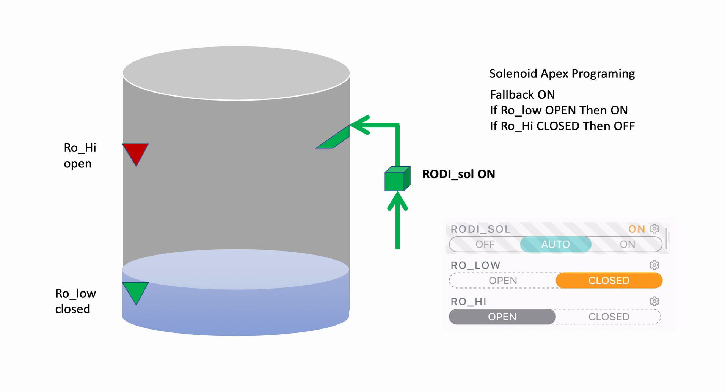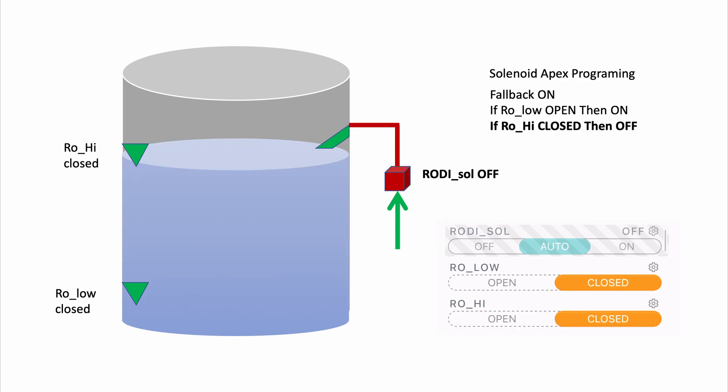So my RODI reservoir will continue to fill up with water and the water level inside it will increase and increase until it eventually reaches the top of the tank it will activate my high optical sensor and at that point the Apex will turn off my solenoid valve preventing any more water from being added to the reservoir.